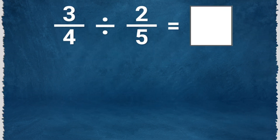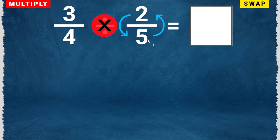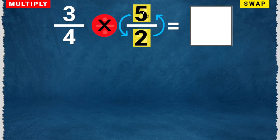For our first example, let's divide 3 over 4 by 2 over 5. The first step is to rewrite or change the division problem to a multiplication problem. To do that, change this to multiply. The next step is to swap the numerator and the denominator of the second fraction. So this will become 5 over 2.